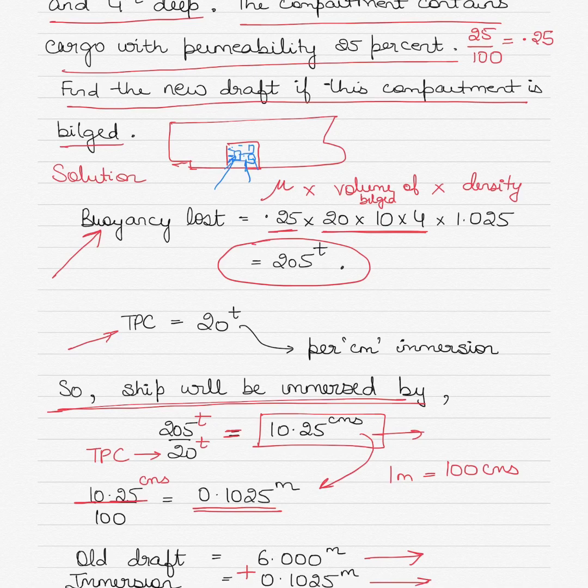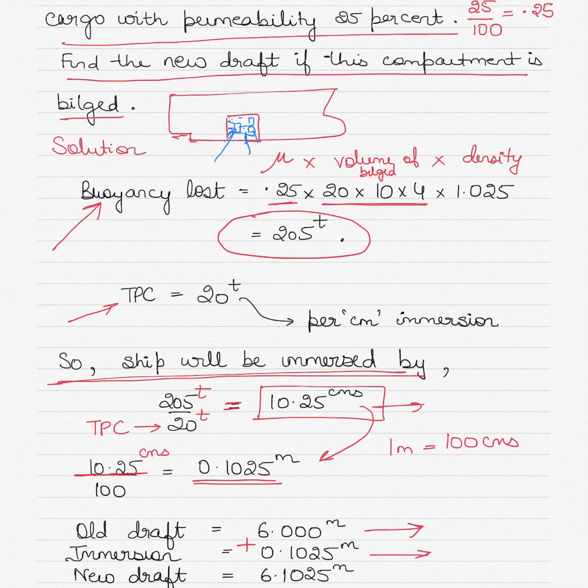Now if every 20 tons is leading to an immersion of one centimeter, so 205 tons will lead to immersion of 10.25 centimeters. So that would mean an immersion of 0.1025 meters, because 10.25 centimeters is equal to 0.1025 meters. So there will be an immersion. You add the immersion to the original draft, and the new draft that you get is 6.1025 meters, which is given here. So that's the answer.